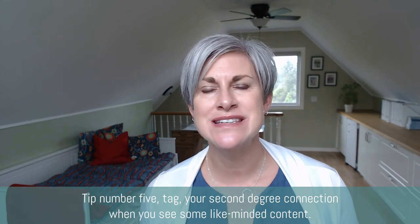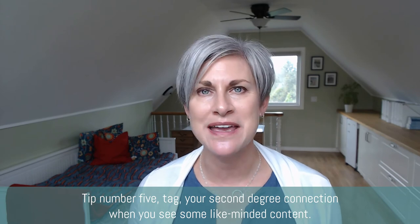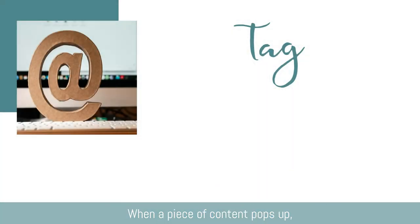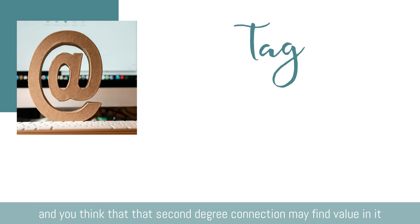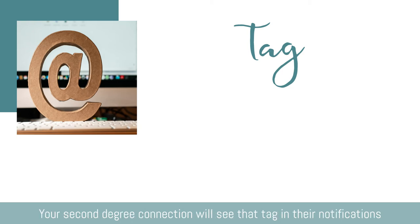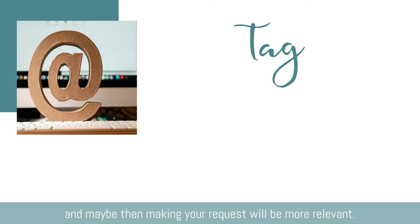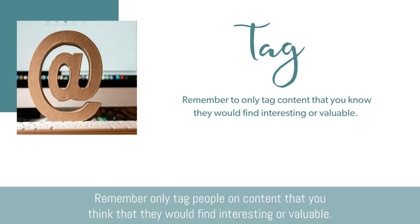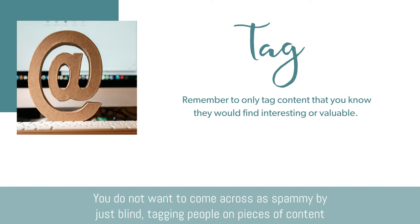Tip number five: tag your second degree connection when you see like-minded content. When a piece of content pops up and you think that second degree connection may find value in it, tag them thoughtfully in the comments of that post. Your second degree connection will see that tag in their notifications, potentially making your connection request more relevant. Only tag people on content that you think they would find interesting or valuable — you do not want to come across as spammy by blind tagging people.